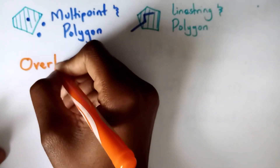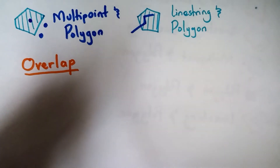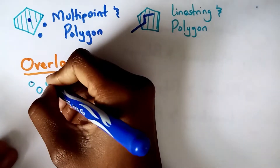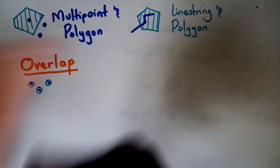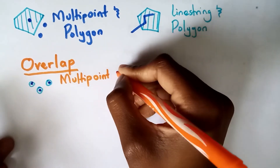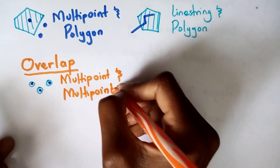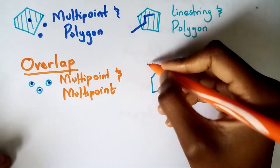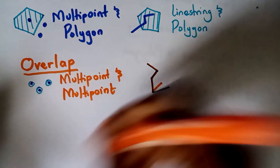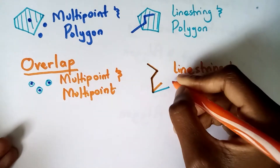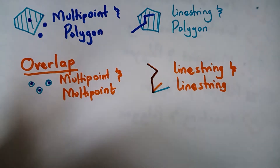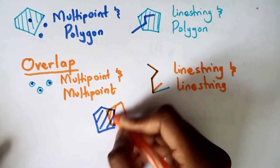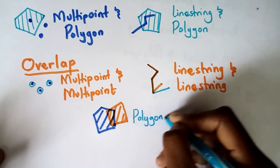We can also test if they overlap. ST_Overlaps compares geometries of the same dimension — say 2D — and returns true if their intersection results in a geometry different from both but of the same dimension. For example, multipoints and multipoints can overlap, as can a line string with another line string, or a polygon overlapping with another polygon.